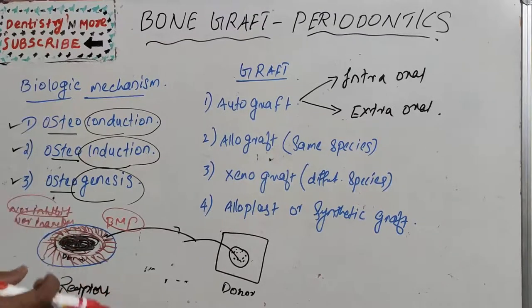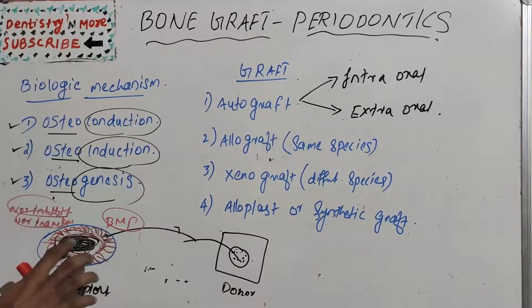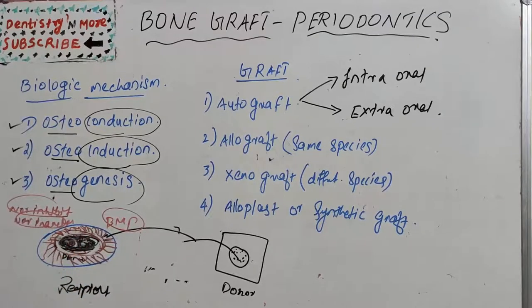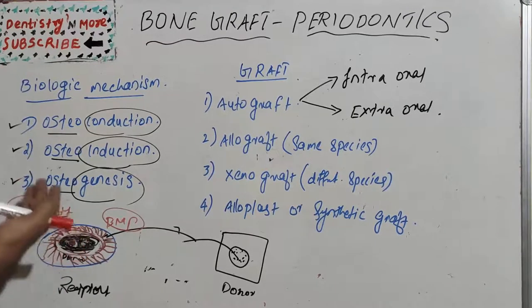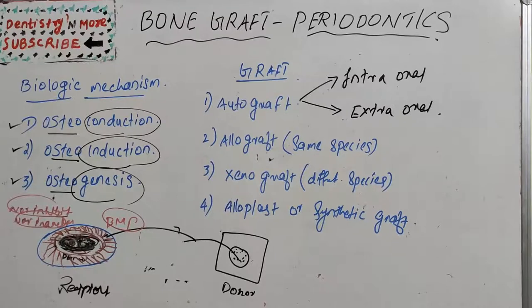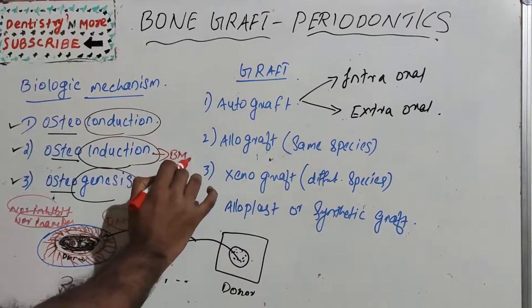Osteogenesis is the normal process of bone formation. It occurs when living osteoblasts are already present as part of the bone graft. When there is adequate blood supply and cellular viability, these transplanted osteoblasts form new centers of ossification within the graft, creating new bone and contributing to the total capacity for bone formation.